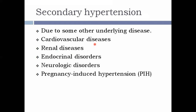Endocrine causes include Cushing syndrome — increased glucocorticoid secretion from the adrenal cortex — and hyperaldosteronism. Aldosterone causes sodium and water retention, which increases blood volume, increasing cardiac output and thus blood pressure. Pheochromocytoma, a tumor of the adrenal medulla, causes increased secretion of adrenaline and noradrenaline, resulting in increased sympathetic discharge. Pill hypertension: some contraceptive pills contain higher amounts of estrogen, which results in increased secretion of angiotensinogen, leading to formation of angiotensin 2, which ultimately increases aldosterone levels and thus blood pressure.